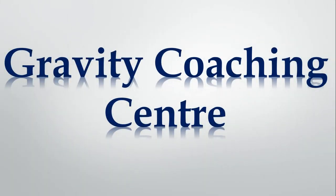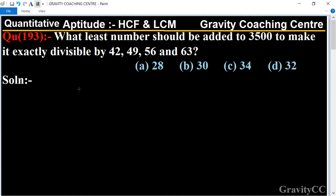Welcome to our channel Gravity Coaching Center. Quantitative Aptitude, chapter HCF and LCM, question number 193. What least number should be added to 3500 to make it exactly divisible by 42, 49, 56, and 63?